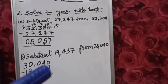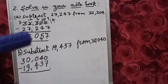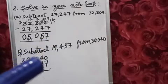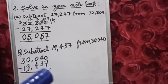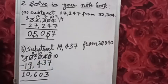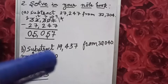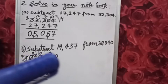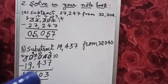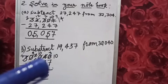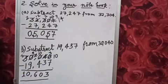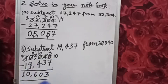We have to take borrow. We can't minus 7 from 0, so we will take borrow. 0 will take borrow from 4. After taking borrow from 4, 0 became 10 and 4 became 3. So 10 minus 7 is 3, and 3 minus 3 is 0.